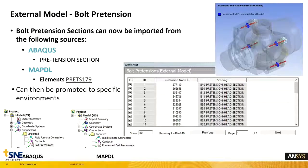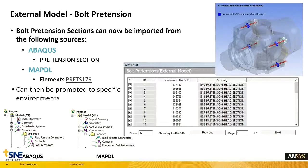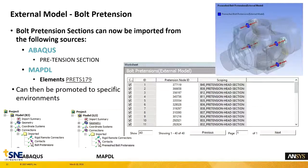Bolt Pretension 데이터를 가져오시기 위해서는 Abaqus의 Pretension Section이나 MAPDL에서 Pre-Stress 179번 요소를 사용했을 때 그 데이터들을 가져와서 확인하실 수 있게 되었습니다. 좌측 하단을 보시면 Abaqus나 MAPDL에서 만들어두었던 Bolt Pretension 하중 값을 가져왔다는 것을 확인하실 수 있습니다.